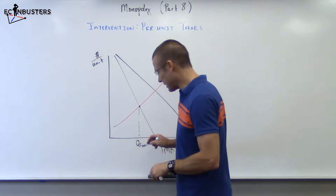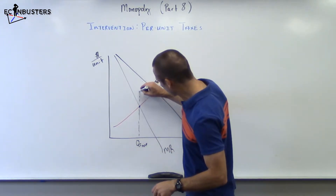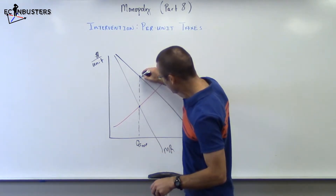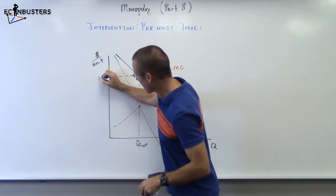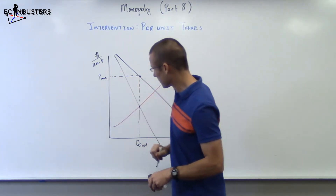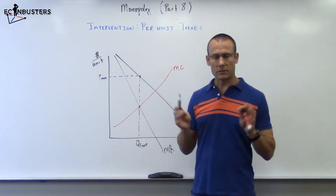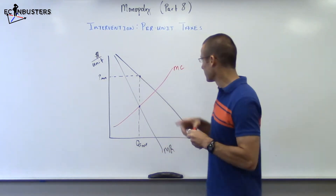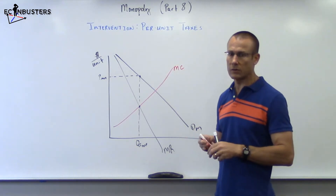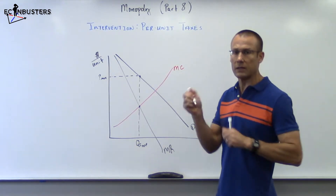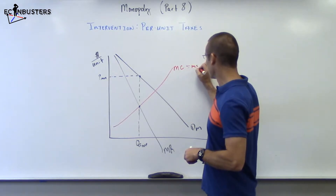What's our price point going to be? Our price point — we go all the way up to the demand curve and over. That's price monopolies. Now we're going to get some dead weight loss if this is the case. Why? Because the marginal cost curve — if no externalities, always have to throw that in — if no externalities, is the marginal social cost curve.